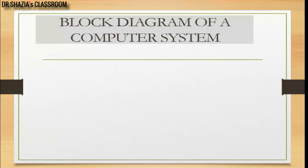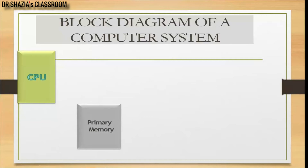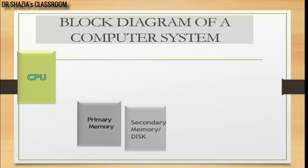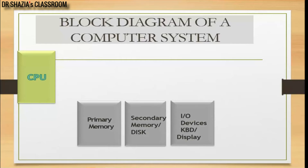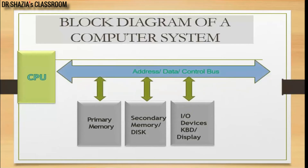To understand the operation of a microprocessor, we will look at the basic blocks in any computing system. The first thing we need is a central processing unit or CPU with some primary memory like ROM or RAM. Along with that we can have secondary memory like a hard disk drive, external USB disk, or optical disk drives, as well as I/O devices like a keyboard, mouse, or display. All these devices are connected to the CPU with the help of a set of buses — the address bus, data bus, and control bus.